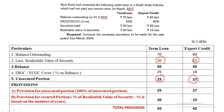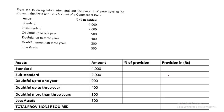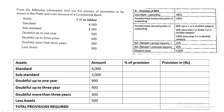Now the second type of sum. From the following information, find out the amount of provision to be shown in the P&L account of a commercial bank. Assets and amounts are given: standard, substandard, doubtful for one year, doubtful for three years, doubtful for more than three years, and loss assets. We note down all the assets and their amounts: 4000, 2000, 900, 400, 300, and 500 — all in lakhs.